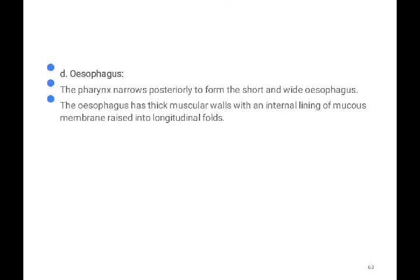The next part of the digestive system is the esophagus. The pharynx narrows posteriorly to form a short and wide esophagus. The esophagus has thick muscular walls with an internal lining of mucous membrane raised into longitudinal folds.